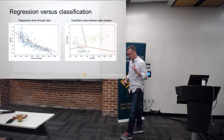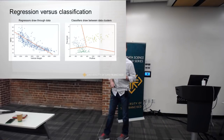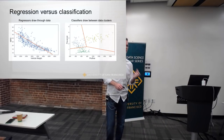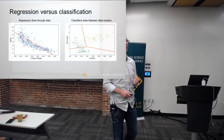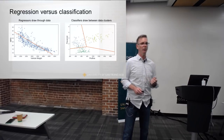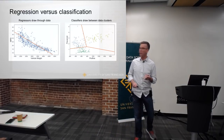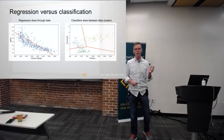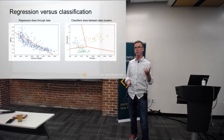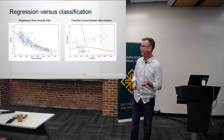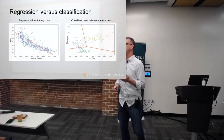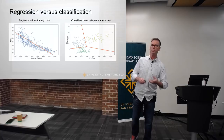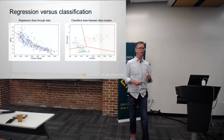So now, just so that we're all on the same page: regression versus classification. Regression draws a decision surface through the data, and classification draws decision surfaces between clumps of data.